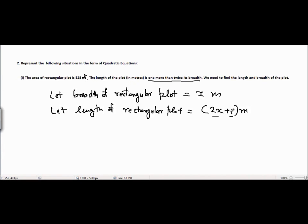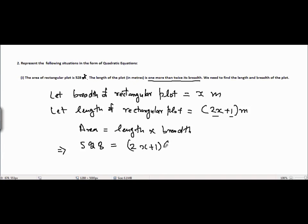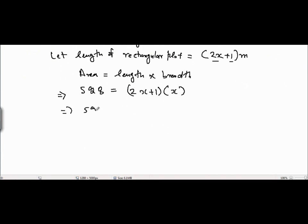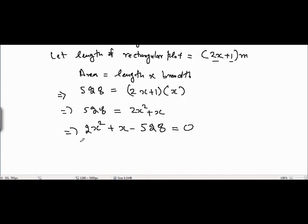Because it is given that the length is 1 more than twice its breadth — twice the breadth is 2x, and it's 1 more than that. The area of any rectangular field equals length into breadth. So the area is given as 528, length is 2x plus 1, and breadth is x. We get 528 equals 2x squared plus x, giving us the quadratic equation 2x squared plus x minus 528 equals 0.